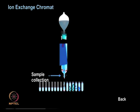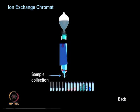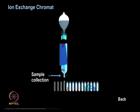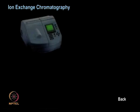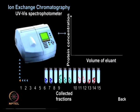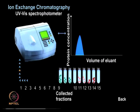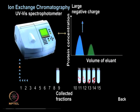Once all fractions are collected, protein content is analyzed using a UV-visible spectrophotometer at 280 nanometers. A graph of eluant volume versus protein concentration can then be plotted. In this example, large negatively charged molecules come first and then positively charged fractions come later.